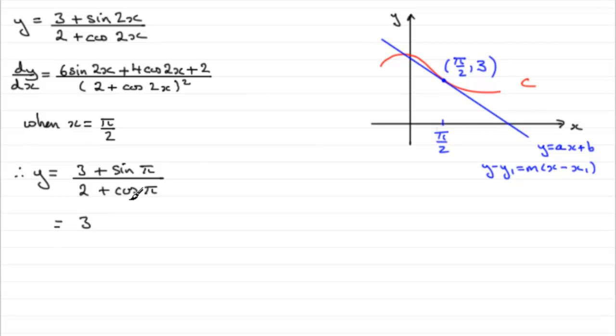So we can get that gradient then by saying that therefore, or also, let's just put also, dy/dx equals. So, if we substitute π/2 here, we're going to have 6 sin π. So 6 sin π plus 4 cos of 2x. Well, that's going to be π again. And then plus 2.